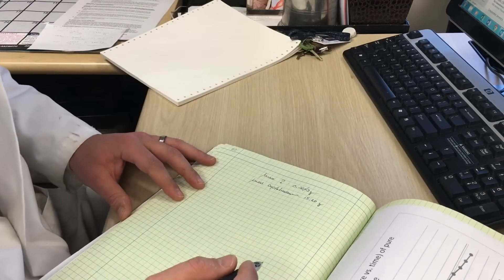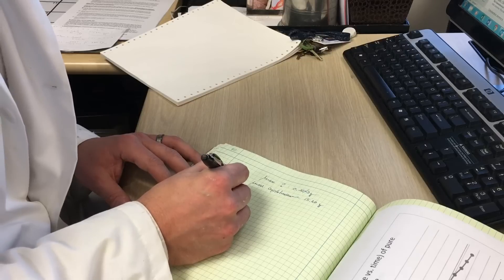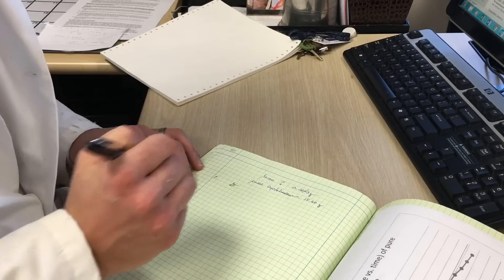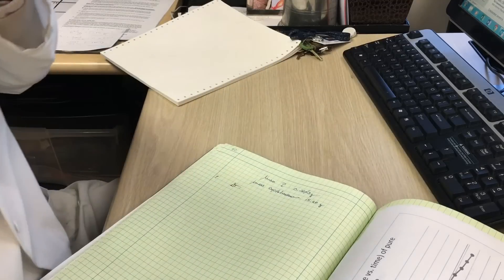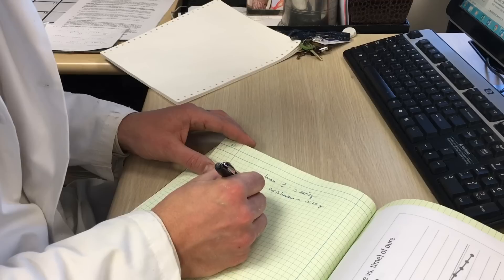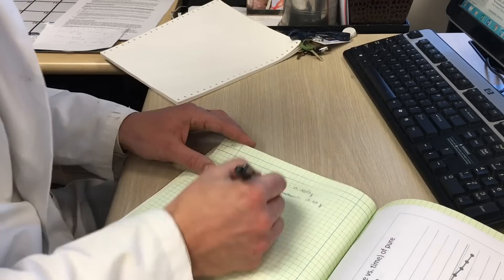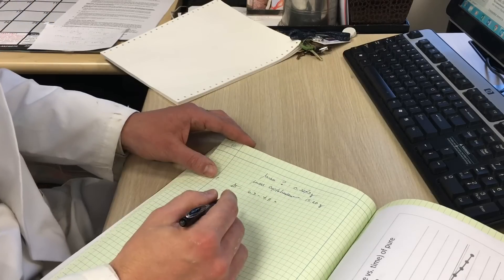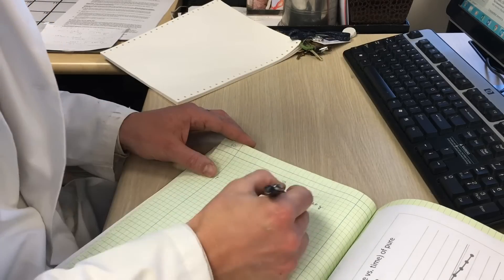We can begin by calculating the change in temperature. This will be our first calculation, freezing point depression. Originally was at 6.3 and then 4.7. So we have a freezing point depression of 1.6 degrees Celsius.